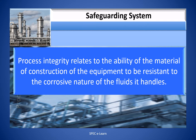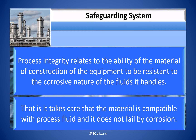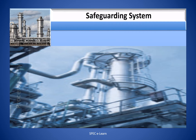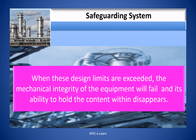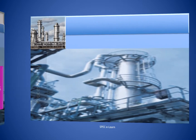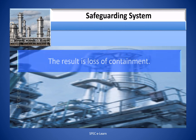Process integrity relates to the ability of the material of construction of the equipment to resist the corrosive nature of the fluid it handles — ensuring the material is compatible with the process fluid and does not fail by corrosion. Mechanical integrity relates to the ability of the equipment to withstand the pressure and temperature limits for which it has been designed. When these design limits are exceeded, the mechanical integrity of the equipment will fail and its ability to hold its contents disappears.